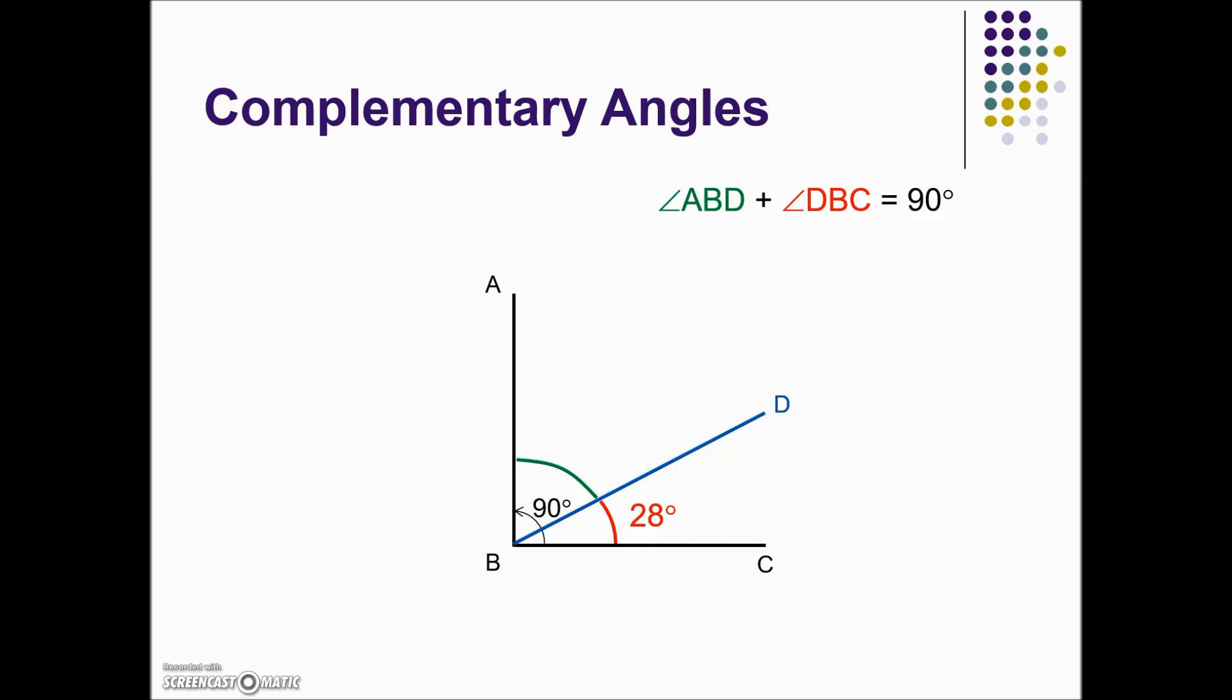From that, if we're given that angle DBC is 28 degrees, we can substitute that in our equation and solve for the other component of this 90 degree angle. What plus 28 equals 90? We'll subtract 28 from 90 to give us the measure of the acute angle ABD having a measure of 62 degrees.